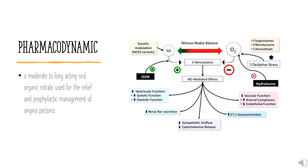Pharmacodynamics: Isosorbide dinitrate is a moderate-to-long-acting oral organic nitrate used for the relief and prophylactic management of angina pectoris. It relaxes the vascular smooth muscle and causes dilatation of peripheral arteries and veins, especially the latter. Dilatation of veins promotes peripheral pooling of blood and decreases venous return to the heart, thereby reducing left ventricular end-diastolic pressure and pulmonary capillary wedge pressure (preload). Arteriolar relaxation reduces systemic vascular resistance, systolic arterial pressure, and mean arterial pressure.